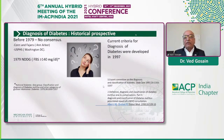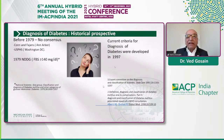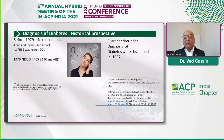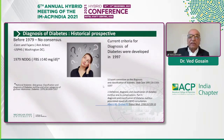The criteria we use currently were developed in 1997. These were based on epidemiological data which showed that at the numbers we now use to make a diagnosis of diabetes, retinopathy took a big jump, and retinopathy was considered to be a specific marker for diabetes.